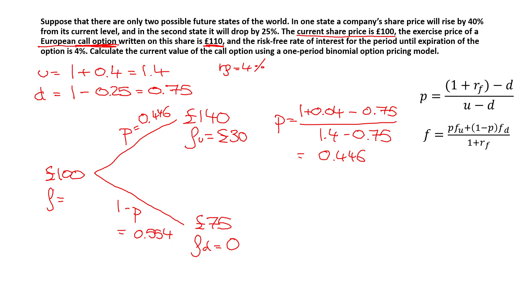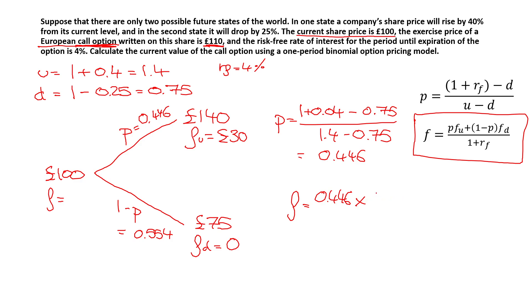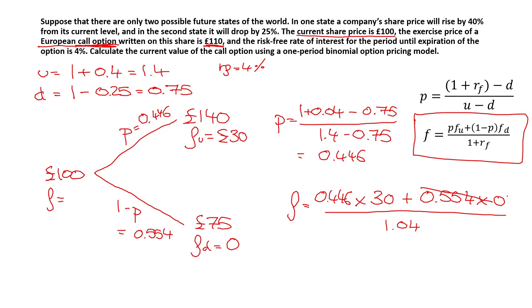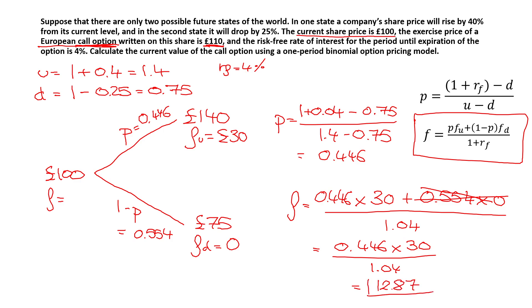Now we can find the current value of the option f, using the formula. f = (p × fu + (1 − p) × fd) / (1 + rf) = (0.446 × 30 + 0.554 × 0) / 1.04. Since anything times zero is zero, this simplifies to (0.446 × 30) / 1.04, which equals £12.87. Therefore, the current value of the call option is £12.87.